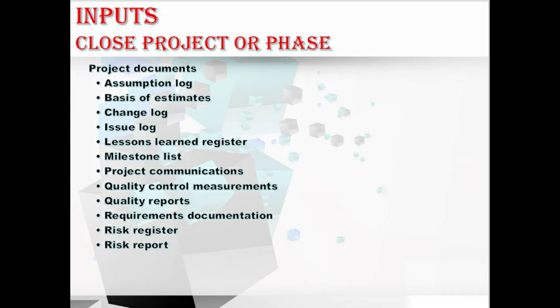Moving to requirements documentation, this is mainly used to demonstrate the compliance with the project scope. Coming to the risk register, it provides information on risks that have occurred throughout the project. Coming to the risk report, it provides information on the risk status and is used to check that there are no open risks at the end of the project.